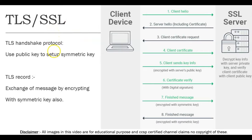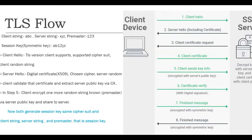In this video lecture, we will discuss the handshake protocol in detail. We will cover this flow in this slide. There are three important strings: the client string, the server string, and the pre-master string. Let's say the client string is ABC, the server string is XYZ, and the pre-master is 123. The client and server use an algorithm and decide to generate a symmetric key based on these three parameters.